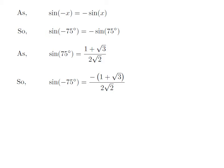So, we get the value of sine of minus 75 is equal to minus of the whole expression 1 plus square root of 3 upon 2 into square root of 2.